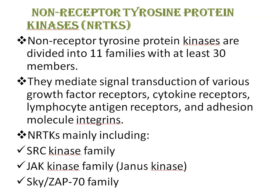The SYK/ZAP-70 family includes SYK and Zeta-chain-associated protein 70 (ZAP-70). It mediates signal transduction of lymphocyte antigen receptors and certain cytokine receptors, and is important in lymphocyte differentiation, development, and activation.